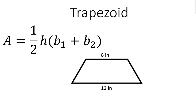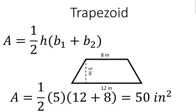Next I have a trapezoid. The area of a trapezoid is equal to one half times the height, times the quantity of the sum of the bases, B1 plus B2. It doesn't matter which one you say is B1 or B2, just as long as you know which one is which. The height of this trapezoid is 5 inches, my base 1 is 12, and my base 2 is 8. Substituting everything into the formula, the area equals one half times 5 times the quantity 12 plus 8.